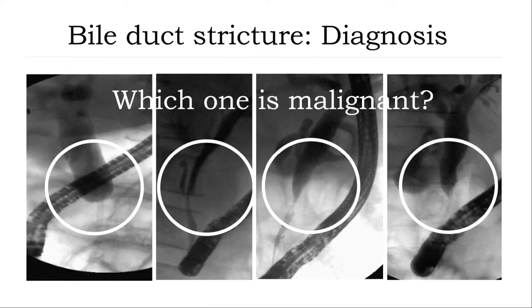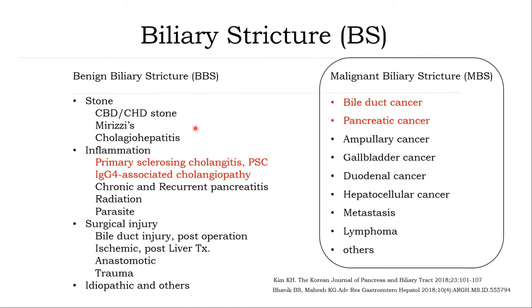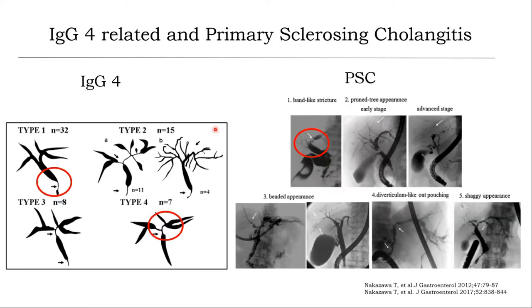Collecting the diagnosis of biliary stricture is really important for proper management. Biliary stricture can be benign or malignant. Malignant causes include primary sclerosing cholangitis and biliary stricture, pancreatic cancer, and also ampullary cancer. Two benign conditions — IgG4-related disease and PSC — can mimic clinical presentation, especially in isolated stricture.